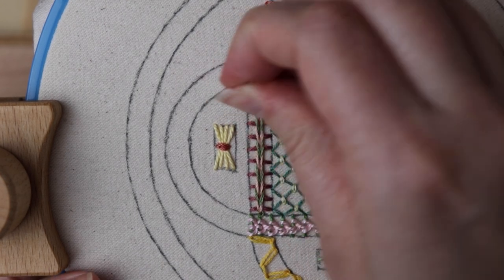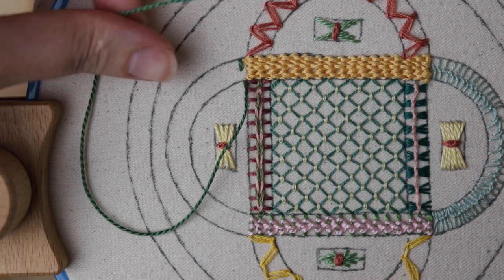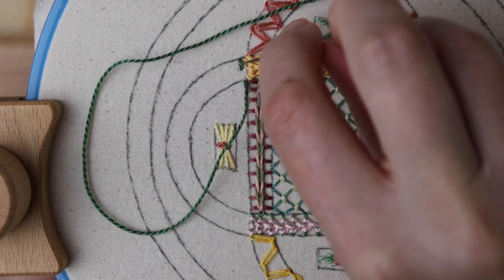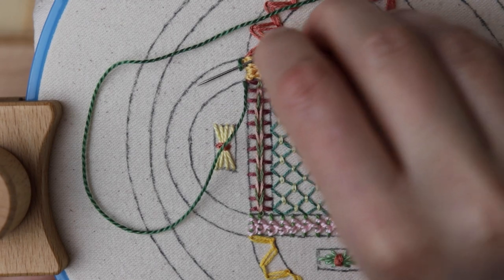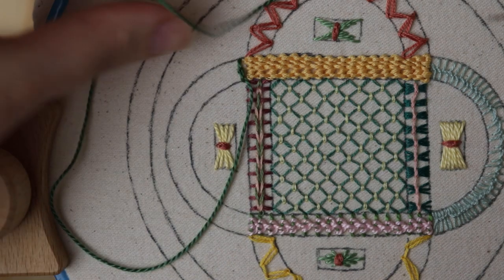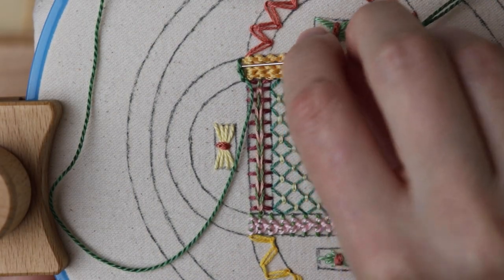Then lay your thread out to create a nice loop on the left side of the stitch. Slide your needle under the stitch from right to left, going through the loop you created, then pull downward to tighten it. Repeat that, laying out the loop again, then sliding your needle under that straight stitch and going through the loop for a second knot.